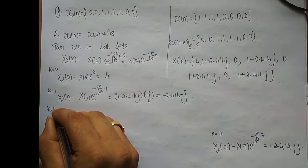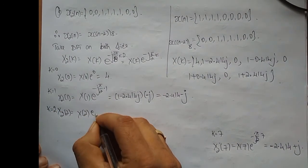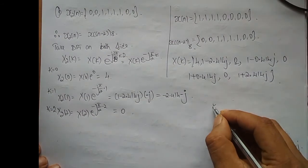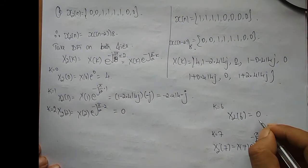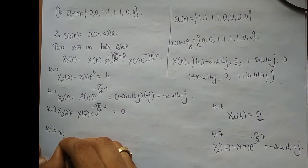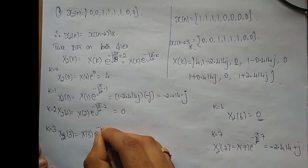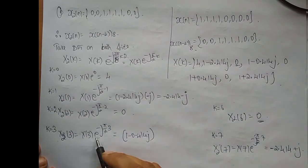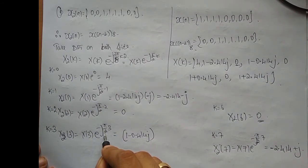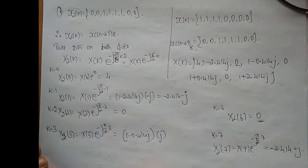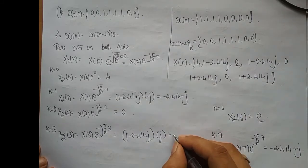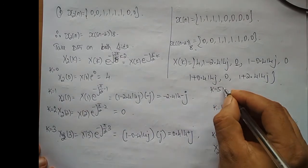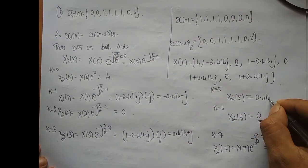For k = 2: X2[2] = X[2] · e^(-jπ) = 0, because X[2] = 0. Therefore for k = 6 also, X2[6] = 0 by complex conjugate symmetry. For k = 3: X2[3] = X[3] · e^(-j3π/2). X[3] = 1 - 0.414j. e^(-j3π/2) = cos(3π/2) - j·sin(3π/2) = j. If you simplify this you get 0.414 + j.